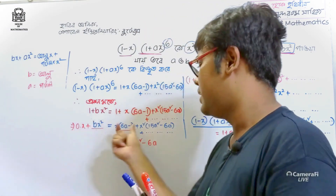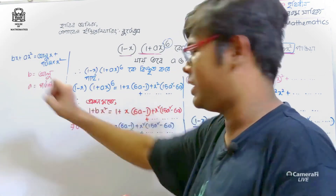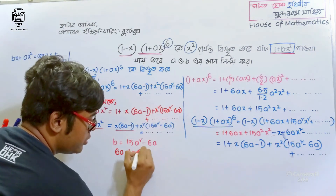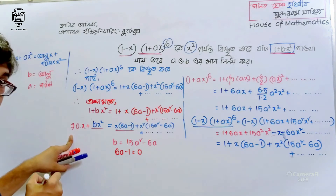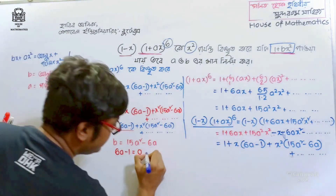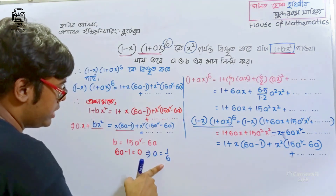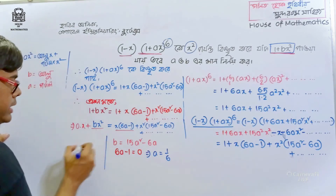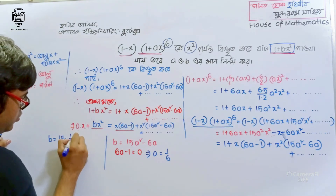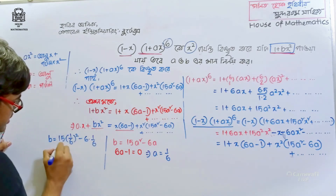Since x is 0, that means 6a minus 1 is equal to 0, because the coefficient of x must be zero. So a is equal to 1 by 6. If a is equal to 1 by 6, then b is equal to 15 times 1 by 6 whole square minus 6 into 1 by 6.